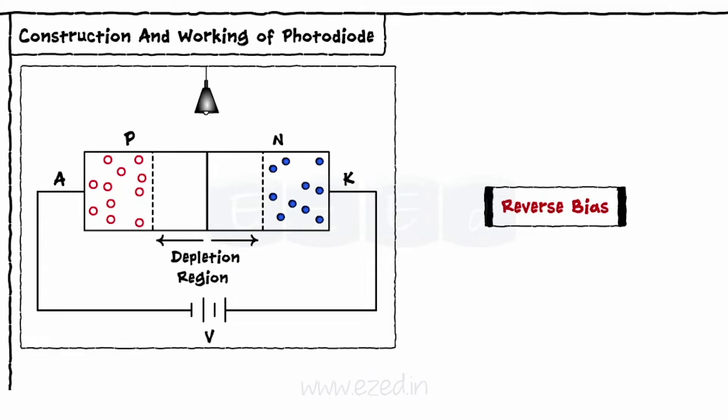While using the photodiode, light is made to incident on the junction. The photons incident on the junction generate electron-hole pairs as shown in the diagram.